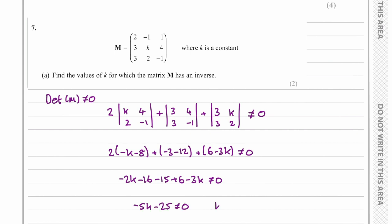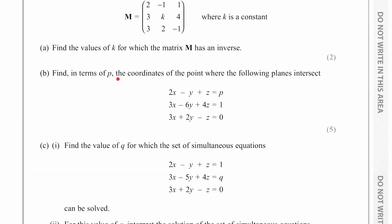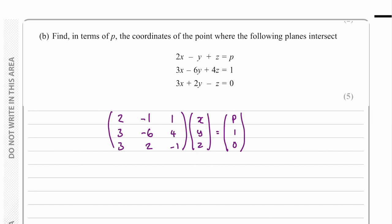So k cannot equal negative five. Then for part b, finding terms of p with coordinates of a point when these planes intersect, so we can extract these coefficients and set up our matrix equation.